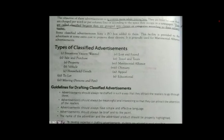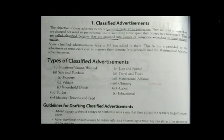In this regard, the objective of classified advertisements is to convey more while paying less. They are brief because they are charged per word, per column, or according to the space they occupy in a newspaper. They are called classified because they are grouped into clauses or categories according to their subject matter. Some classified advertisements have a PO box added to them. This facility is provided to advertisers at some extra cost to reserve their identity. It is generally used for matrimonial alliances advertisement.